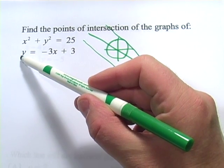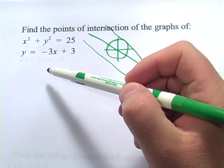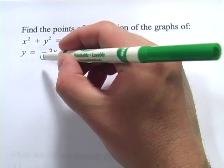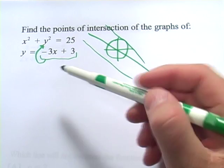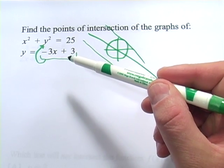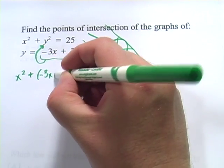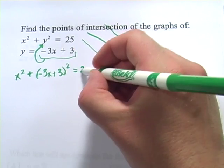In this case, we have one equation that's solved for a variable. So it looks like it might be good to use substitution here. So that's what I'm going to do. Since y equals negative 3x plus 3, I'm going to substitute that in up here for y. Then I'll have one equation with x and I can solve for x. So let's go ahead and do that. So I've got x squared plus negative 3x plus 3 quantity squared, that's the y, equals 25.